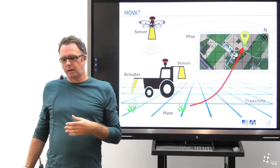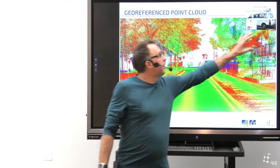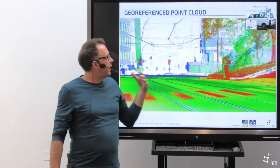I will also show some examples like this one, where we use these methods based on a mobile system where we have a laser scanner, GNSS and IMU, and where we generate georeferenced point clouds with very high accuracy as you can see here.